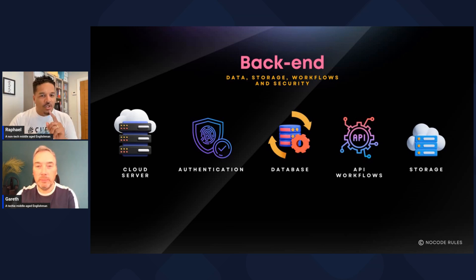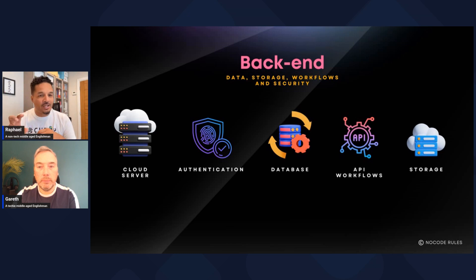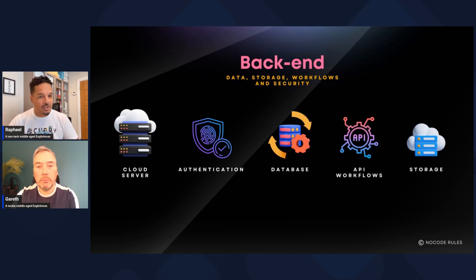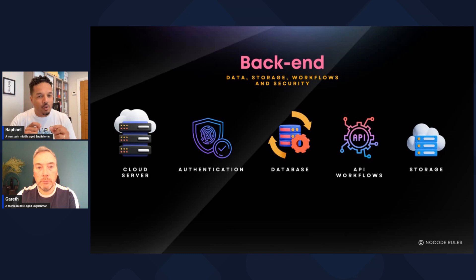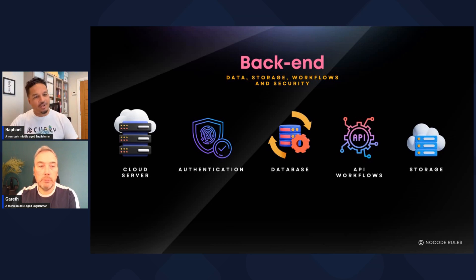One analogy that always comes up with APIs is someone going into a restaurant and placing an order. The waiter takes the order to the kitchen, the kitchen cooks it, and the waiter brings it back. The API is the waiter — it takes a request to the cloud server or database and brings it back. This also brings up security: once something is in the browser, client-side, there are security issues because it can potentially be hacked.